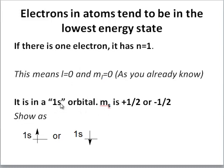n equals 1, and s means l equals 0. m sub s is plus one-half or minus one-half because m sub s does not depend on any of the other quantum numbers. This situation is often shown pictorially: for one electron in a 1s orbital, you have a 1s slot, and an upward arrow indicates positive m sub s, and a downward arrow indicates negative m sub s. This sort of picture is called an orbital diagram.